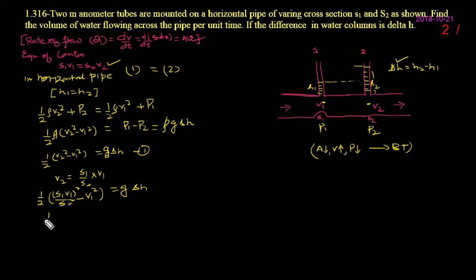Now, again, how do you calculate the value of V1? You can take half V1 square common. Inside the bracket, you have S1 square upon S2 square minus 1 is equal to G into delta H. Now, I can write the value of V1 that will be under root.